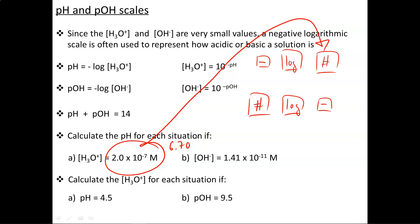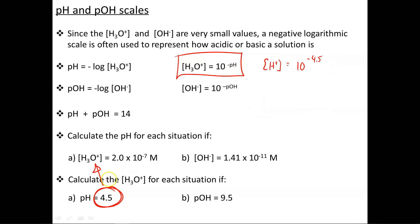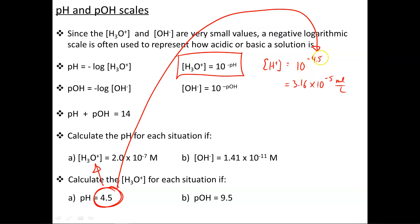But what if they give you the pH value and ask you to find the hydronium concentration instead? We use the equation: hydronium concentration (in moles per liter) equals 10 to the power of negative pH. So plugging in a pH of 4.5 gives 10 to the negative 4.5, which equals 3.16 times 10 to the power of negative 5 moles per liter. Remember, any time we write H+, we really mean hydronium, H3O+ — it's just a shortened way of writing it.